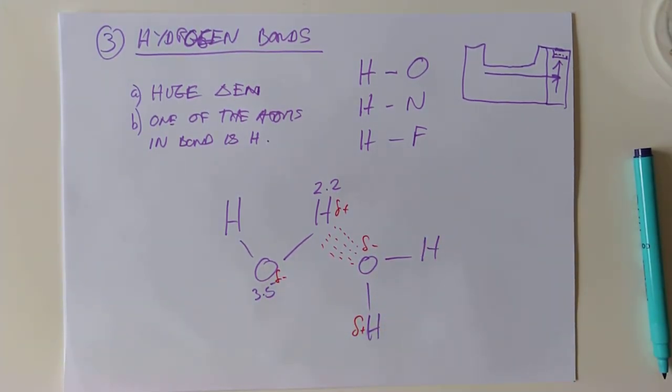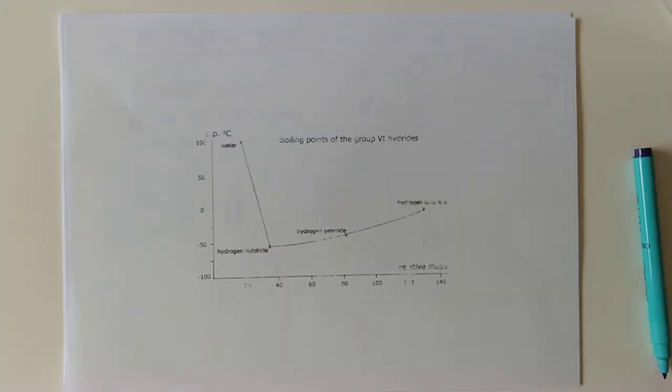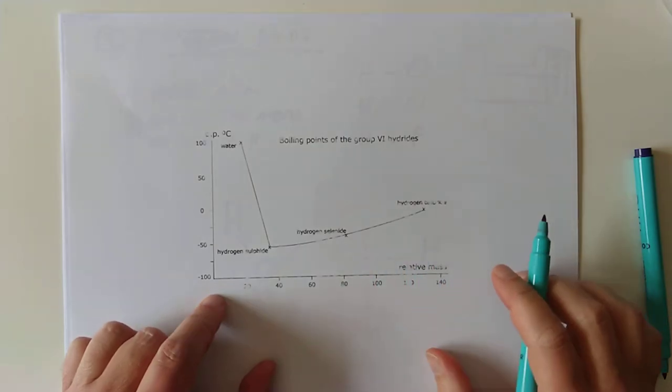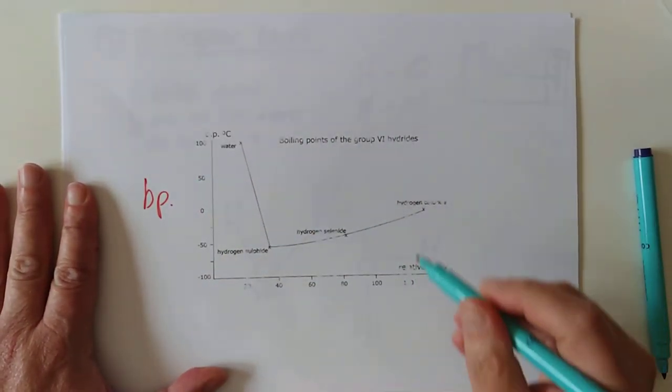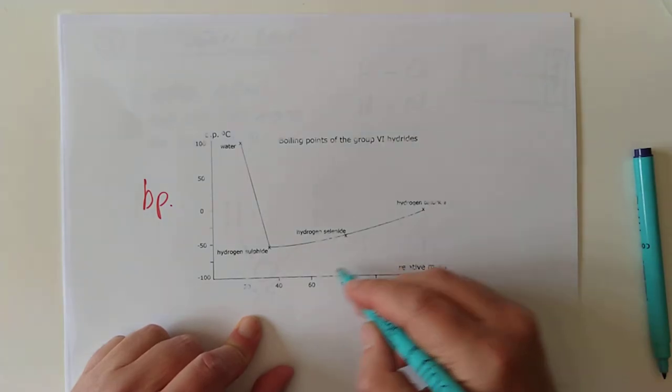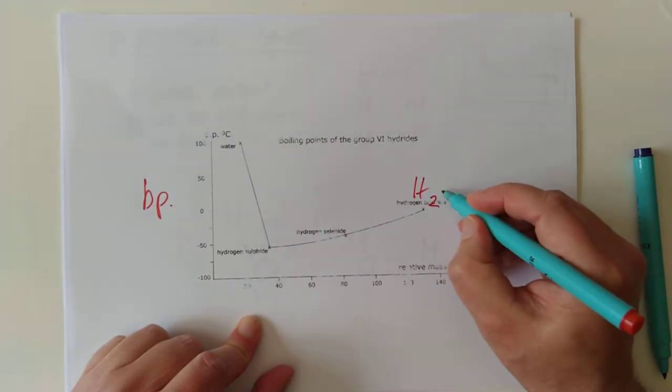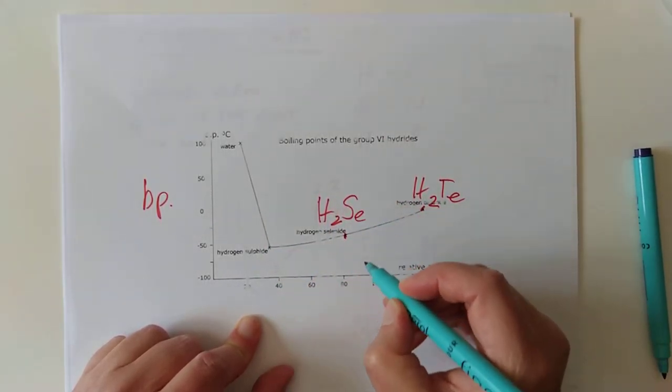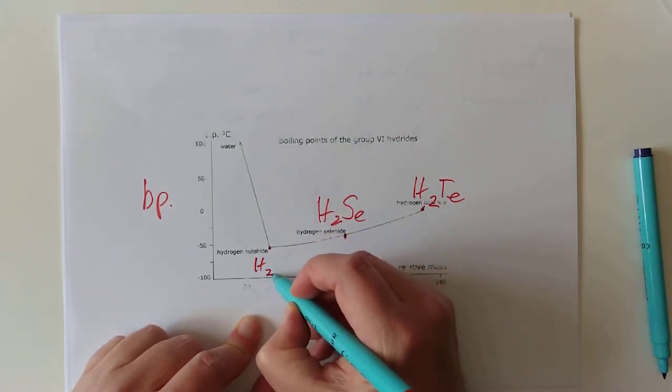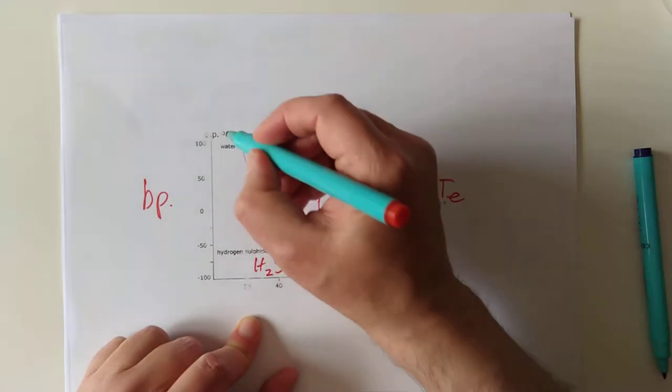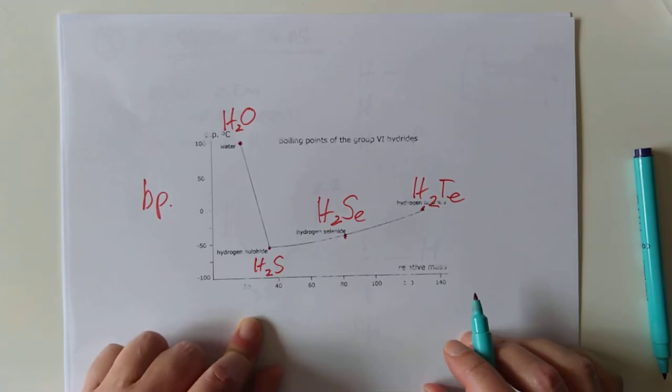Hydrogen bonds are so strong that they have ridiculous effects on things like boiling points. Let me show you. I've got a pre-printed slide here. What I've got here, folks, is a graph of boiling point of group 6 hydrides. In other words, group 6 in the periodic table attached to hydrogen. So these are all compounds. This is H2Te. This point here is H2Se, hydrogen selenide. This one here is H2S. You notice we're moving up group 6. So tellurium, selenium, sulphur, and then the top of group 6 is oxygen. So H2O.